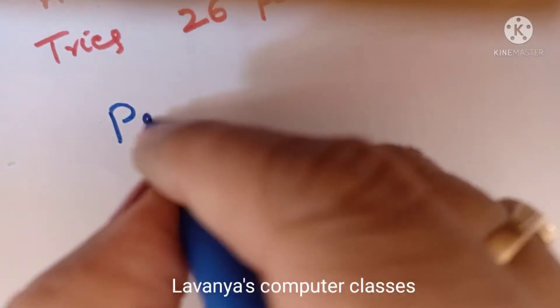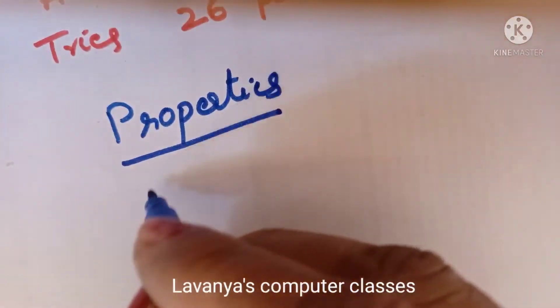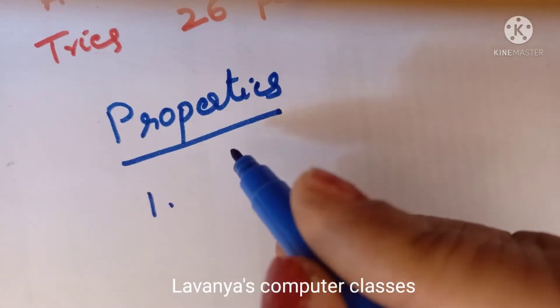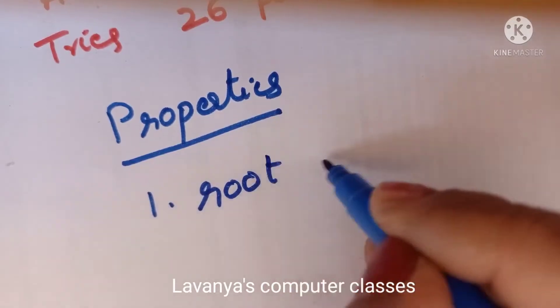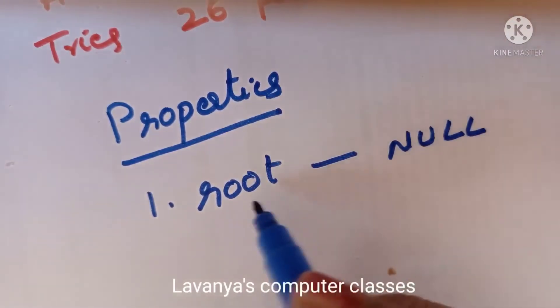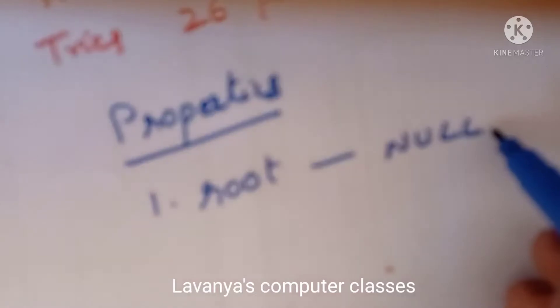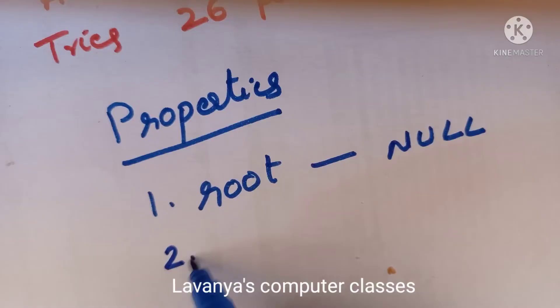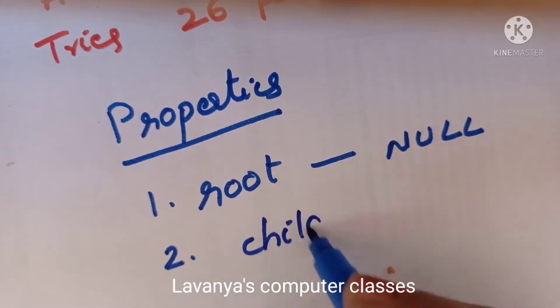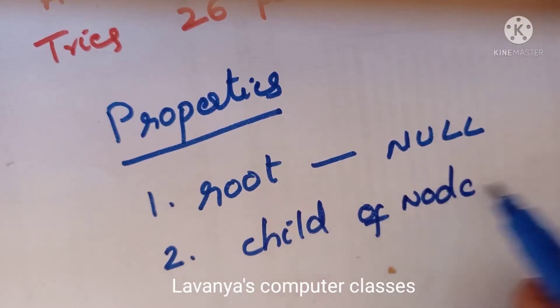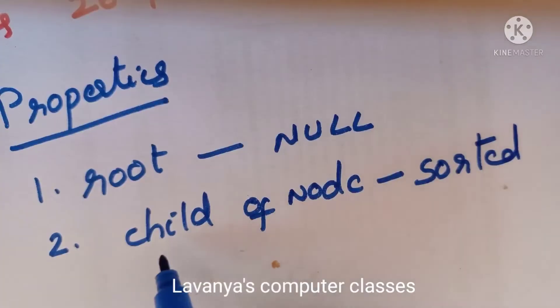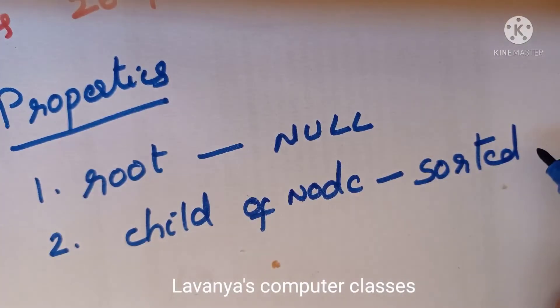Now the properties of a trie: First property — the root node of the trie always represents a null node. That means the root node's label is always null. Second property — each child of a node is sorted alphabetically.